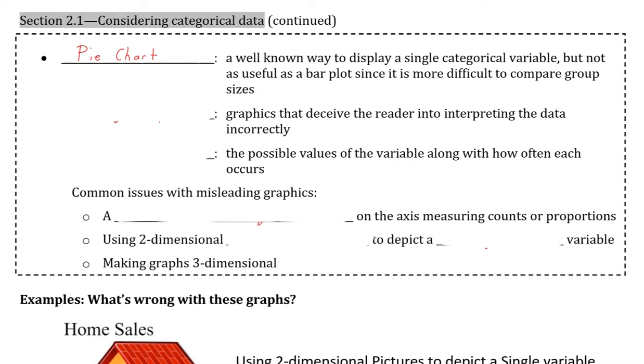A bar plot is relatively easy to compare values since you are only analyzing a single dimensional measure, the height of the bars, but with pie charts you are typically analyzing a two-dimensional measure, area, which is more difficult for the human brain to compare.